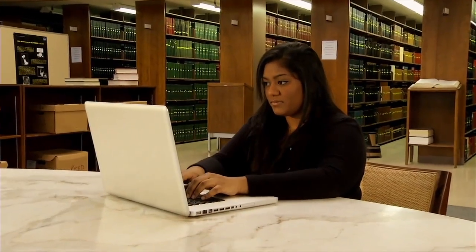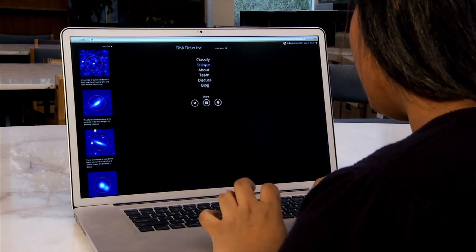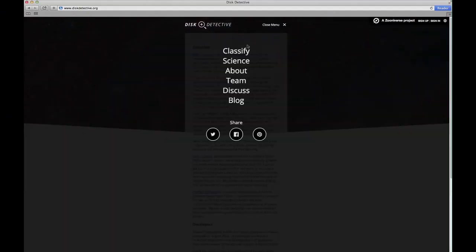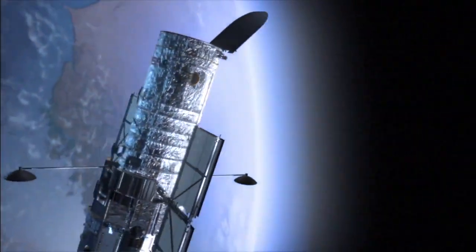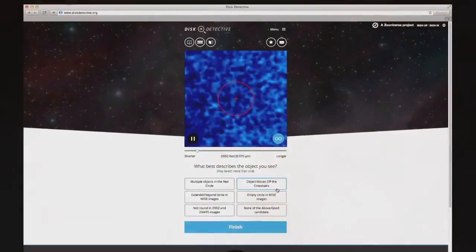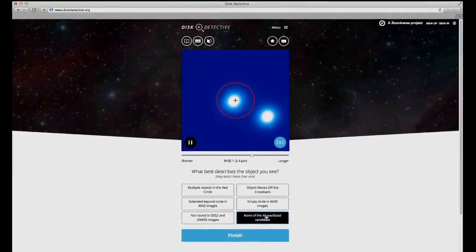Diskdetective.org is a NASA-led crowdsourcing project whose main goal is to produce publishable scientific results. The disks we find together will be future targets for telescopes like Hubble and the James Webb Space Telescope, which will search for patterns in the disks and for extrasolar planets they may contain. We hope you'll join us.